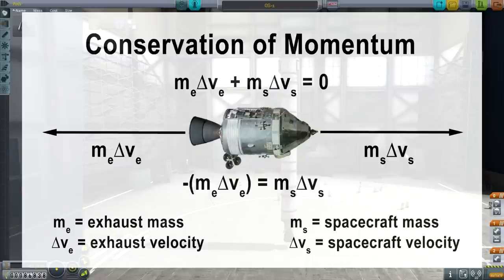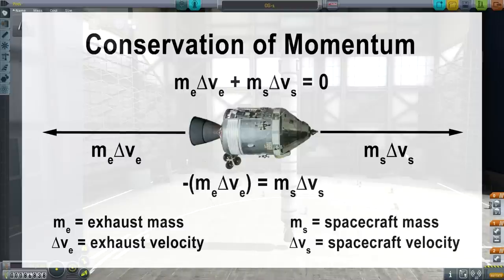The faster you can eject the exhaust out, the faster your spacecraft will go for a given amount of mass. If you want to reduce the amount of fuel mass you're carrying, you want to shoot it out at a faster velocity. So exhaust velocity is the key to efficiency in a spacecraft — that's basically your fuel efficiency, the V sub E in those equations. We've also talked about delta-V, and you see the delta-V on both sides of the equation.